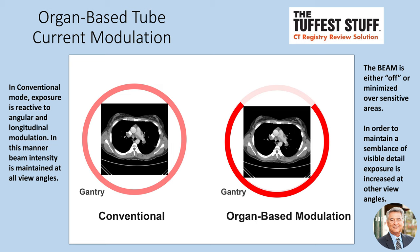This limits exposure to breast tissue, thyroid tissue, or the lens of the eye. That's what makes organ-based tube current modulation a viable alternative to bismuth contact shields in particular.